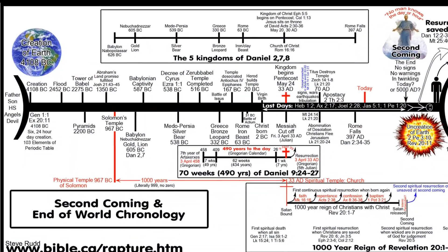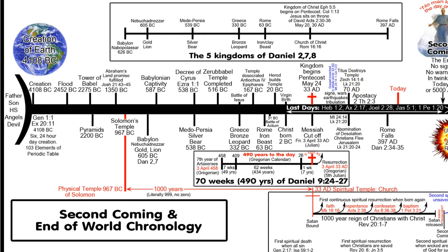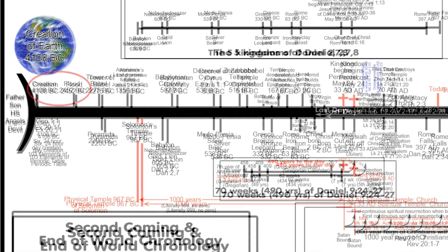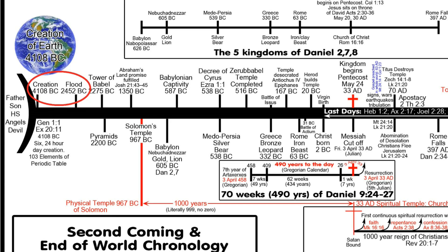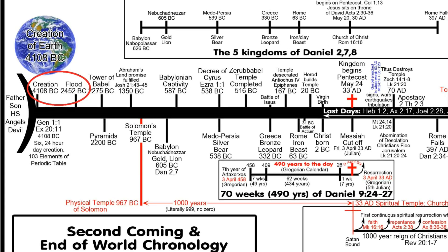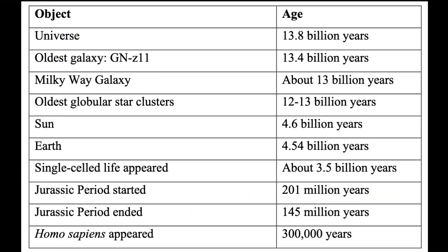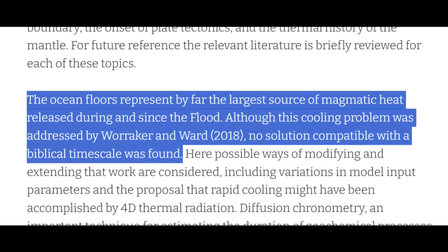Young Earth creationism, on the other hand, arguably makes some falsifiable claims, like the universe being about 6,000 years old and that the entire world was flooded about 4,300 years ago. But those claims have been demonstrated to be false.